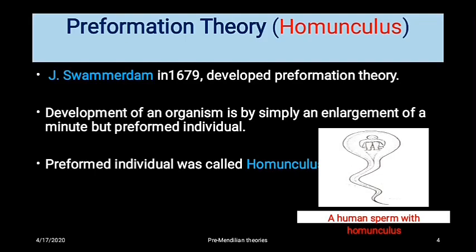The first theory is the pre-formation theory, also known as the homunculus theory. It was proposed by J. Swammerdam in the year 1679. According to this theory, the whole organism is formed by the enlargement of a single small miniature structure, which he called homunculus — a preformed individual in a sperm or egg.